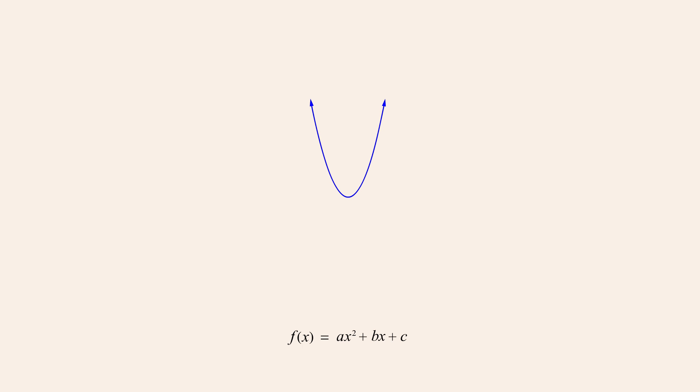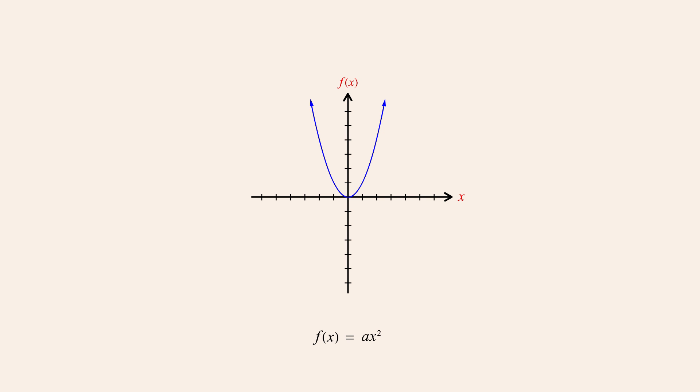The graph of any single-variable quadratic function always has the same basic shape called a parabola. In general form, the constants b and c do not affect the parabola's shape, only its position. When b and c are zero, the parabola's vertex will lie at the origin.